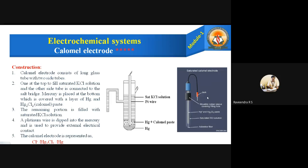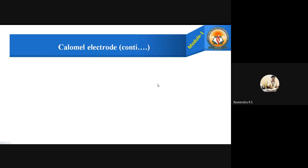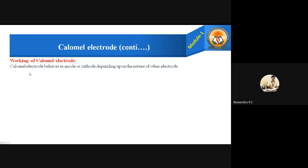This is an actual picture of the calomel electrode. Now, the important point: working of the calomel electrode. Working is more important because here we have to explain the reactions at the anode and cathode. The calomel electrode behaves as an anode or sometimes a cathode, depending upon the nature of the other electrode it is coupled with.